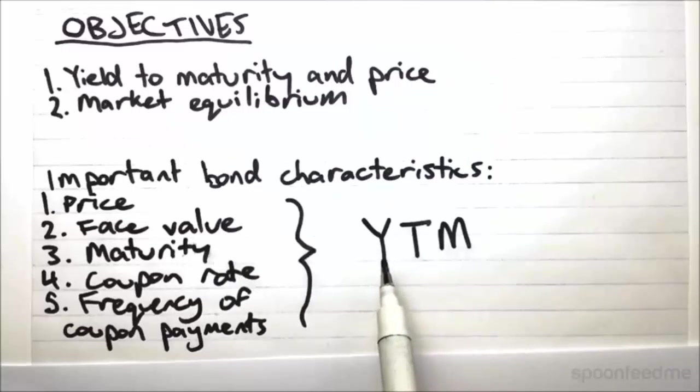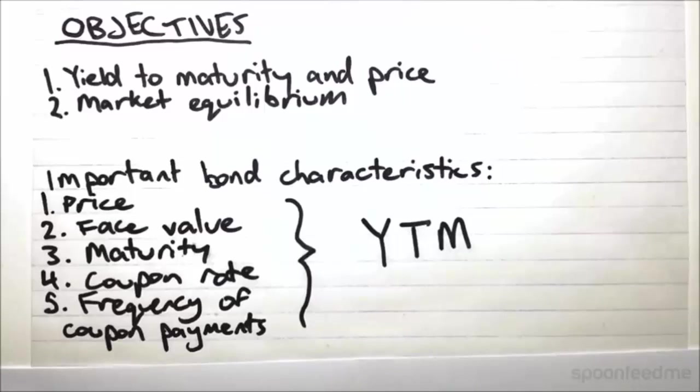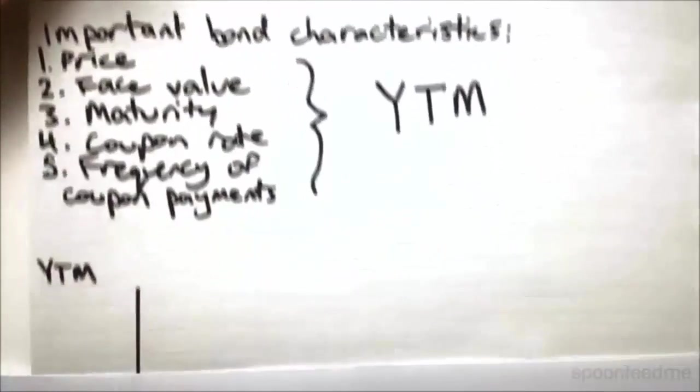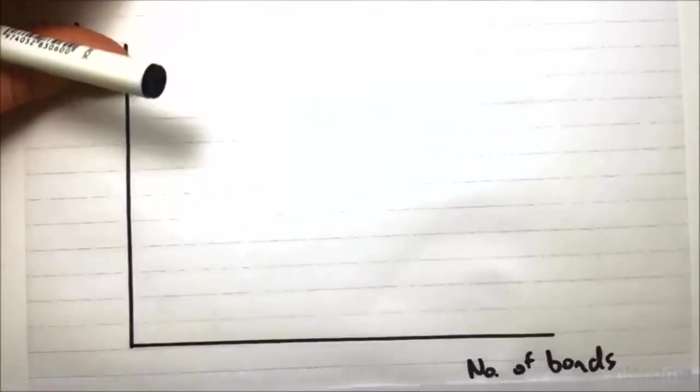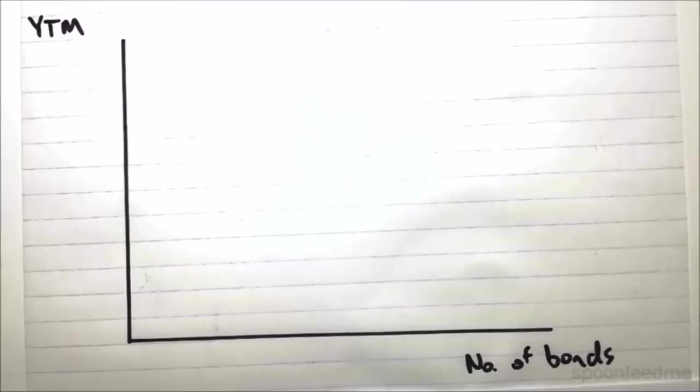So now this is where we start to get a little bit of economics involved. So the yield to maturity is our way of measuring the profitability of our bond. So depending on the yield to maturity, we expect that in the market there will be a certain number of bonds being demanded by the market and a certain number of bonds being supplied by the market, all according to what the yield to maturity is.